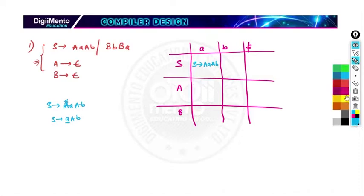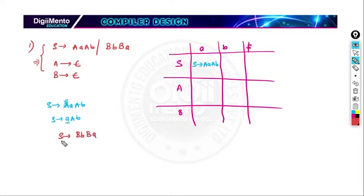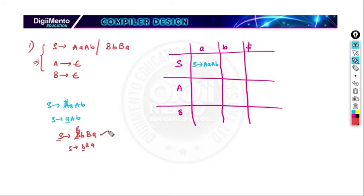Now consider the second production S → bBa. FIRST of S here is small b, since B has epsilon. So FIRST of S is small b, and we write the production S → bBa in the column for small b.